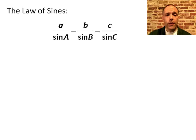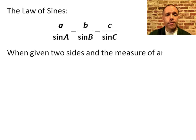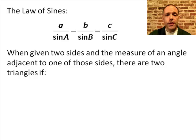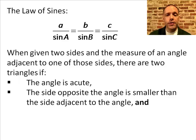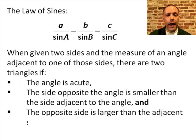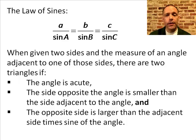You've already learned the law of sines, and you know that when given two sides and the measure of an angle adjacent to one of those two sides, the law of sines gives two triangles — if the angle is acute, the side opposite the angle is smaller than the side adjacent to the angle, and the opposite side is larger than the adjacent side times sine of the angle.